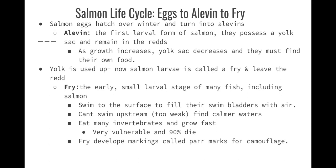Fry are the early, small larval stages of many fish, including salmon. They're going to swim to the surface to fill their swim bladders with air — fish have swim bladders that keep them buoyant. They can also release some of that air to start to sink. They can't swim upstream because they're way too small. They eat many invertebrates and even other zooplankton, and they grow really fast. They're really vulnerable — many will die because they can't reach the calmer waters upstream, they're just at the mercy of where they're living.